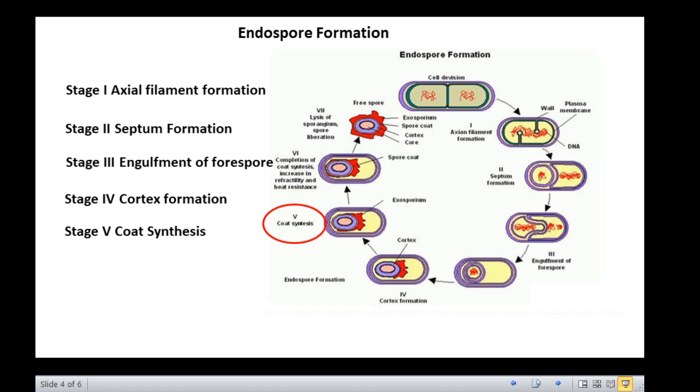This is followed by exosporium formation. A loose-fitting glycoprotein sac called the exosporium envelops the spore structure. The exosporium is comprised mainly of proteins, lipids, and carbohydrates, and this composition gives the exosporium its inherent hydrophobic characteristic that makes it insoluble and contributes to the pathogenicity of the spores.